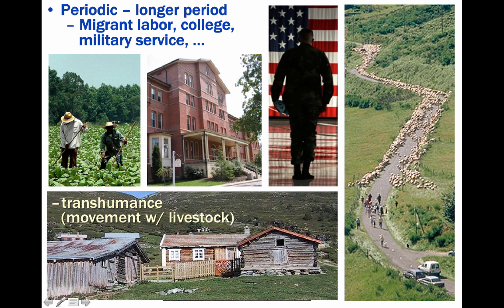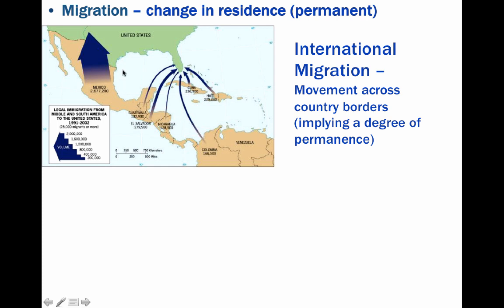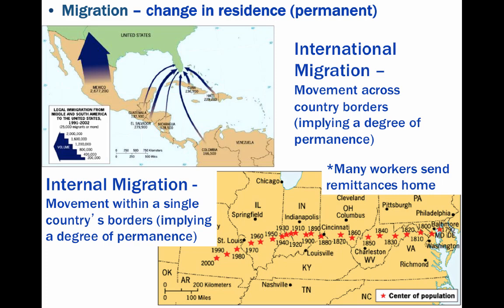When movement results in permanent relocation across significant distances, it is classified as migration. The process of migration involves the long-term relocation of an individual, household, or larger group to a new locale outside the community of origin. We can look at international migration — migrants moving into the United States from Latin America. There was a great deal of permanent relocation, but many are guest workers who receive part-time visas to work for a short period of time and send remittances, or money, back home. There's also intranational or internal migration. You can see where the center of the United States population was back in 1790, and how over time and over the decades it has moved further west and slightly south.